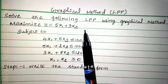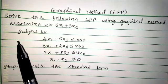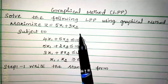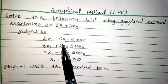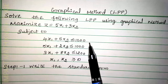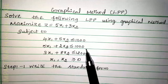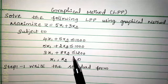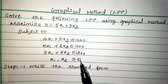Now let us move on to the problem. Solve the following LPP using the graphical method: Maximize Z equal to 5x1 plus 3x2, subject to the constraints: 4x1 plus 5x2 less than or equal to 1000; 5x1 plus 2x2 less than or equal to 1000; 3x1 plus 8x2 less than or equal to 1200; and x1, x2 greater than or equal to 0.